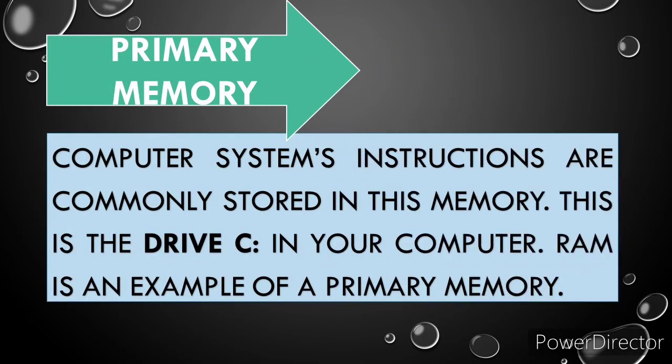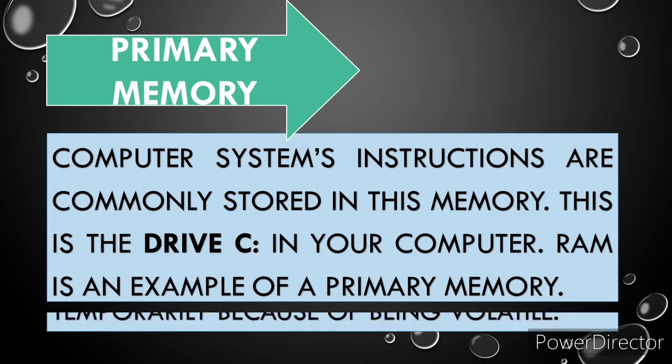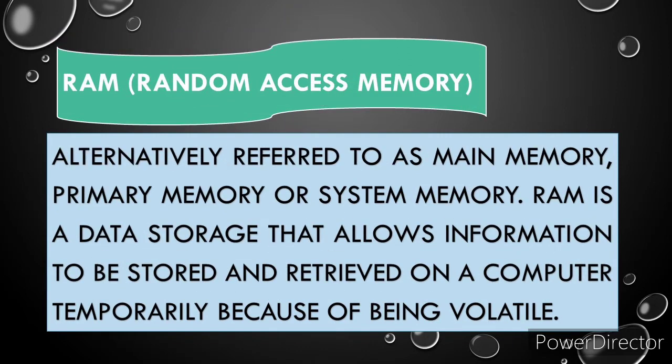Primary memory: computer system instructions are commonly stored in this memory. This is the drive C in your computer. ROM is an example of a primary memory. The ROM, or random access memory, alternatively referred to as main memory, primary memory, or system memory, is data storage that allows information to be stored and retrieved on a computer temporarily because of being volatile.